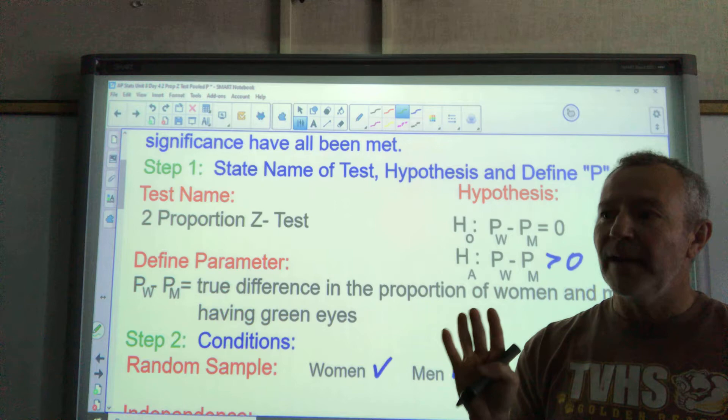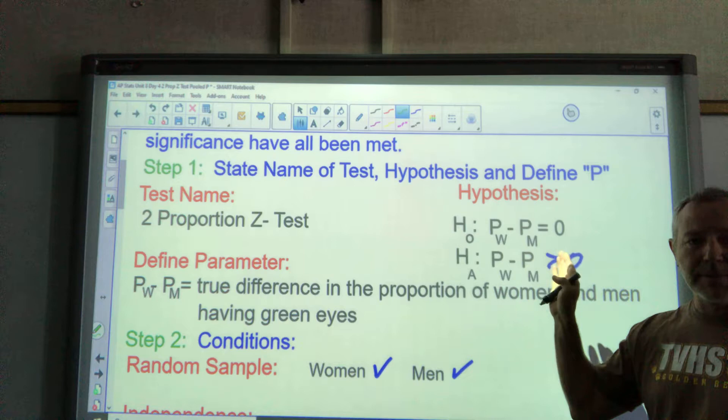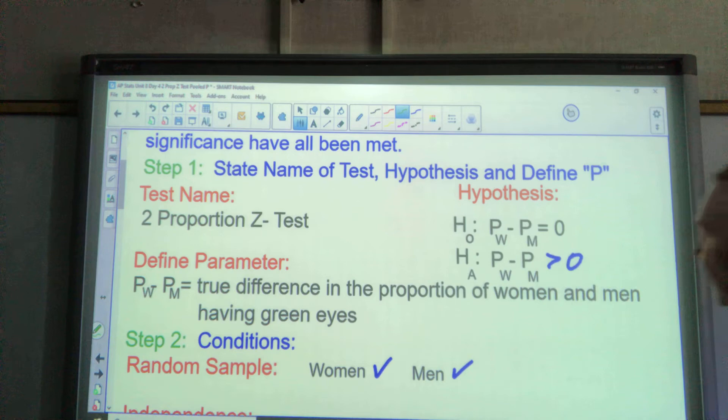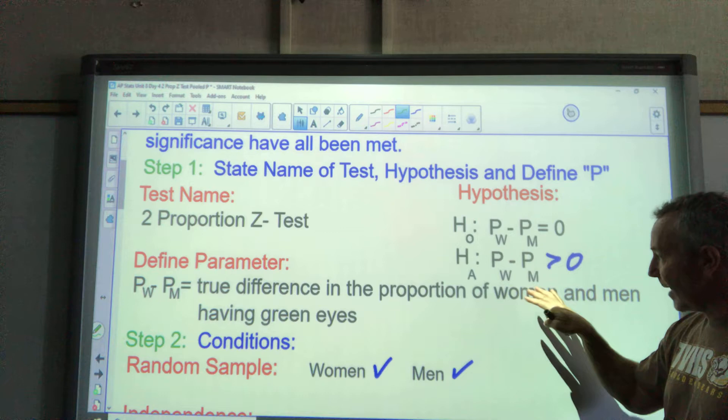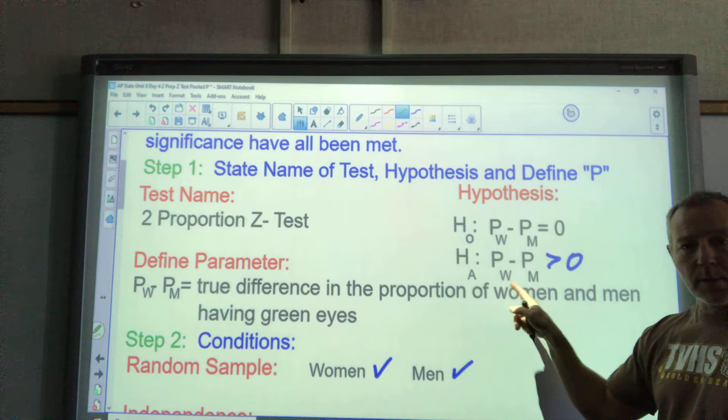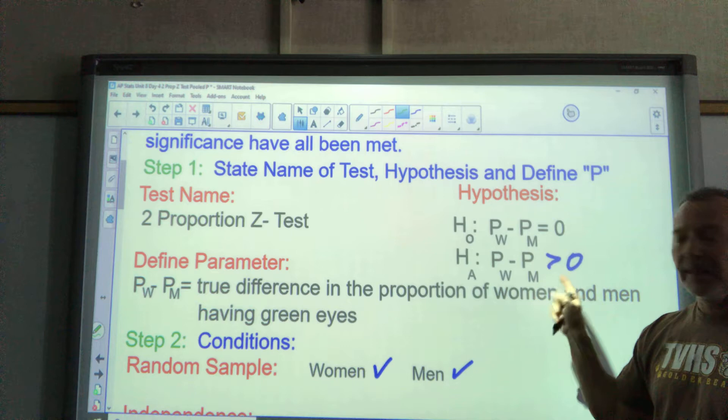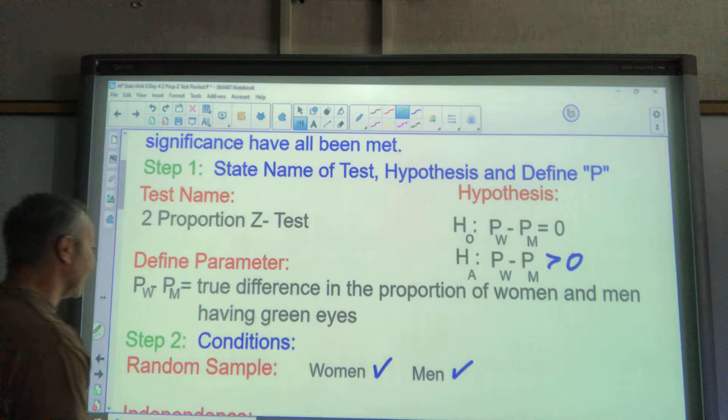But the hypothesis always has to have parameters. They're proportions, so it has to be two Ps up there. We're doing the difference in two parameters. Typically, almost always, we're finding out if one is bigger than the other or if they're different or not. And where that transpires is when the difference is zero. So if there was no difference, the difference would be zero when I subtract them. And we found a difference. Maybe the women are higher, so we're going to look at that. But this is almost always going to be zero right there.